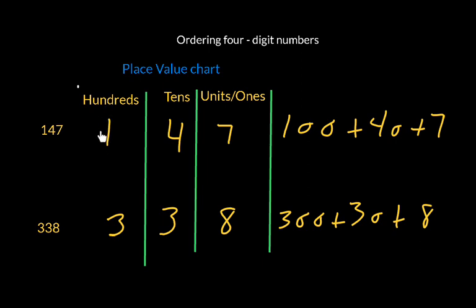If we start at the leftmost column, which in this case for these two numbers is the hundreds column, we can see that the digit 1 and the digit 3 are in the hundreds columns, and we know that obviously 3 is larger than 1, so 338 must be larger than 147.